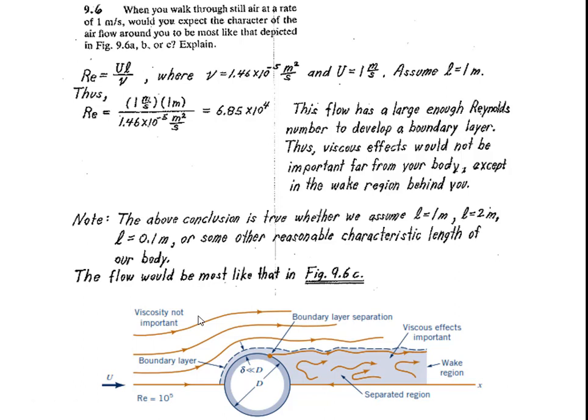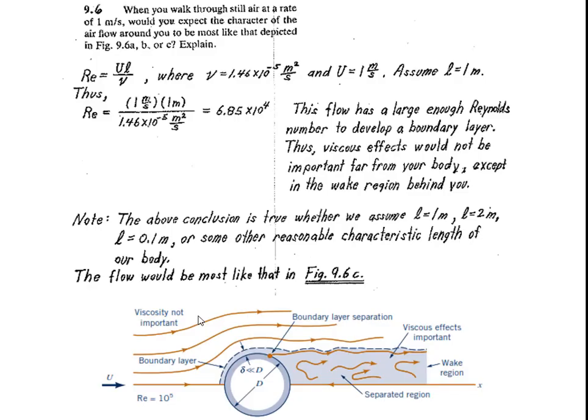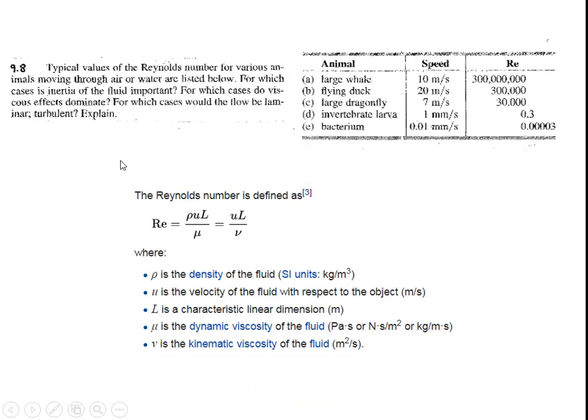The above conclusion is true whether we take L = 0.1 m or some other reasonable characteristic length of our body. The flow would be most like Figure 9.6c. In the last example we talked about a small fish with small flow, 15 mm is very small length, so you have no boundary layer type flow. Here the scale exponential 4 is important.